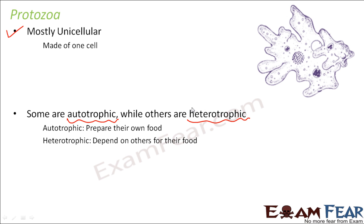Some protozoa are autotrophic while others are heterotrophic. 'Auto' means self, so autotrophic organisms prepare their own food and are self-dependent. 'Hetero' means others, so heterotrophic organisms depend on others for their food.